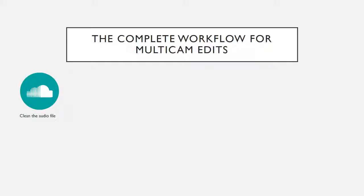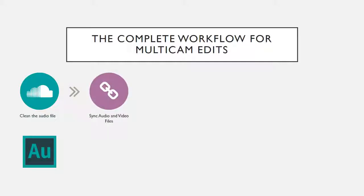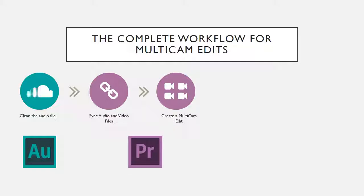First, we're going to take the audio from our external recorder and clean the audio file for background noise — we'll be doing this in Adobe Audition. The second thing is, once we have the audio cleaned up, we need to sync the audio with the video files. Once the sync is complete, we will create a multi-cam edit, and both of these steps will be completed in Adobe Premiere Pro.